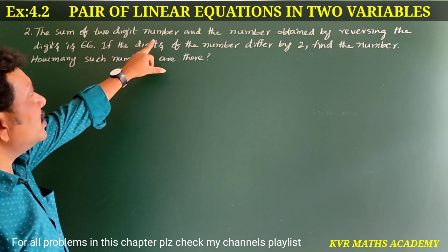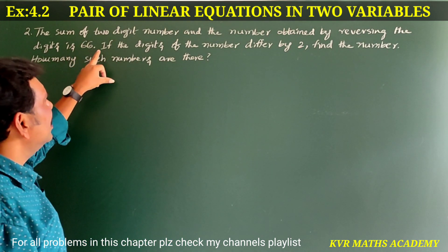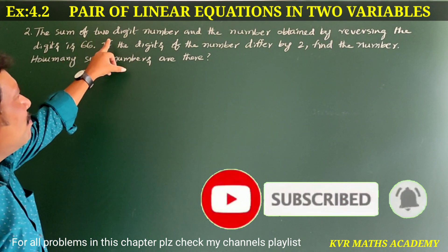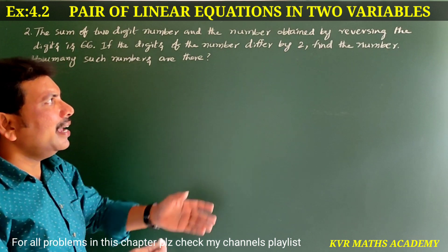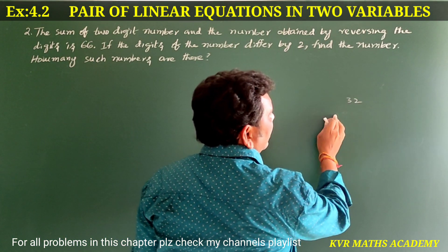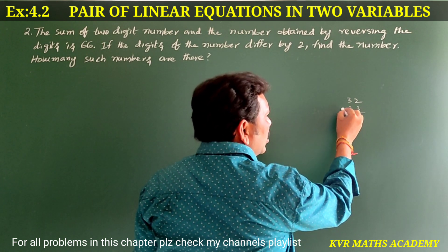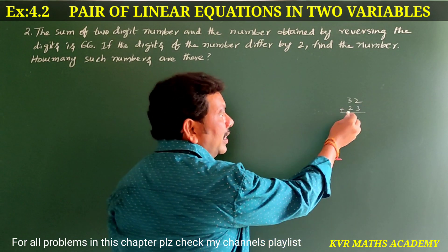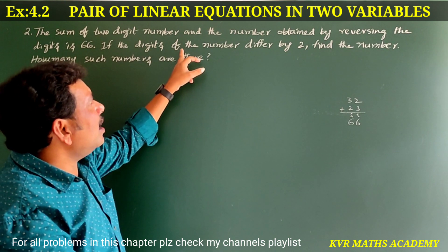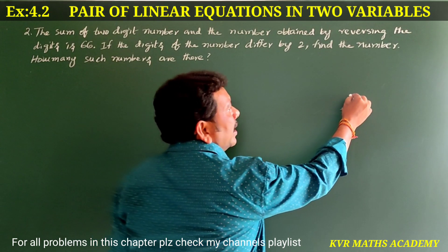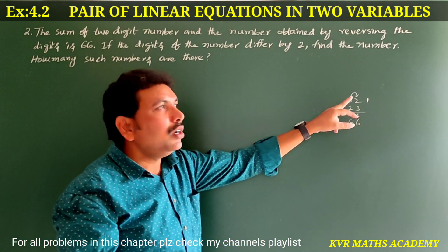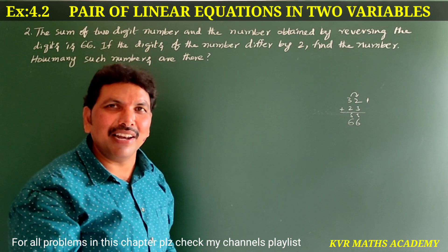Now the second question. The sum of a two-digit number and the number obtained by reversing the digits is 66. If the digits of the number differ by 2, find the number. How many such numbers are there?